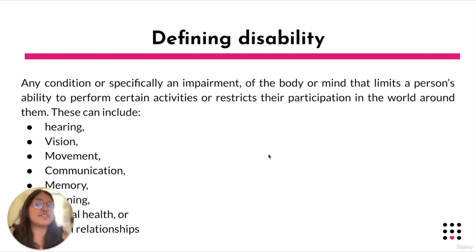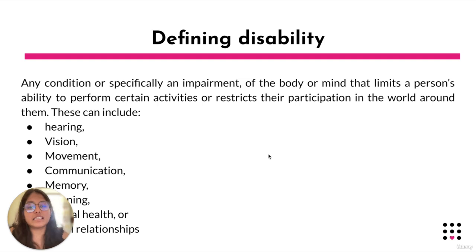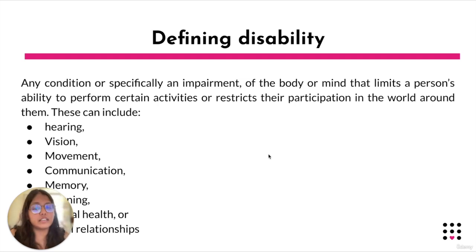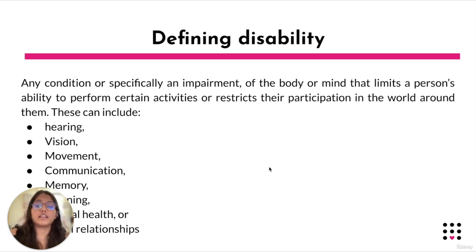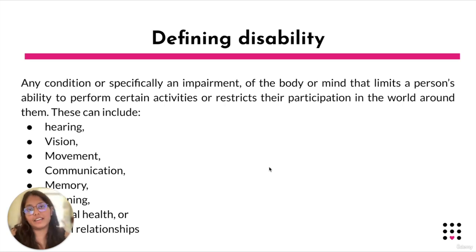While this understanding of disability is not incorrect, let us examine it further and identify if there are any gaps. The Centers for Disease Control and Prevention describe a disability as any condition or specifically an impairment of the body or mind that limits a person's ability to perform certain activities or restricts their participation in the world around them. Disabilities can be related to hearing, vision, movement, communication, memory, learning, mental health, or social relationships. A person can have more than one disability, and disabilities can be present at birth, a result of injuries, progressive, intermittent, or related to a long-standing condition as well.